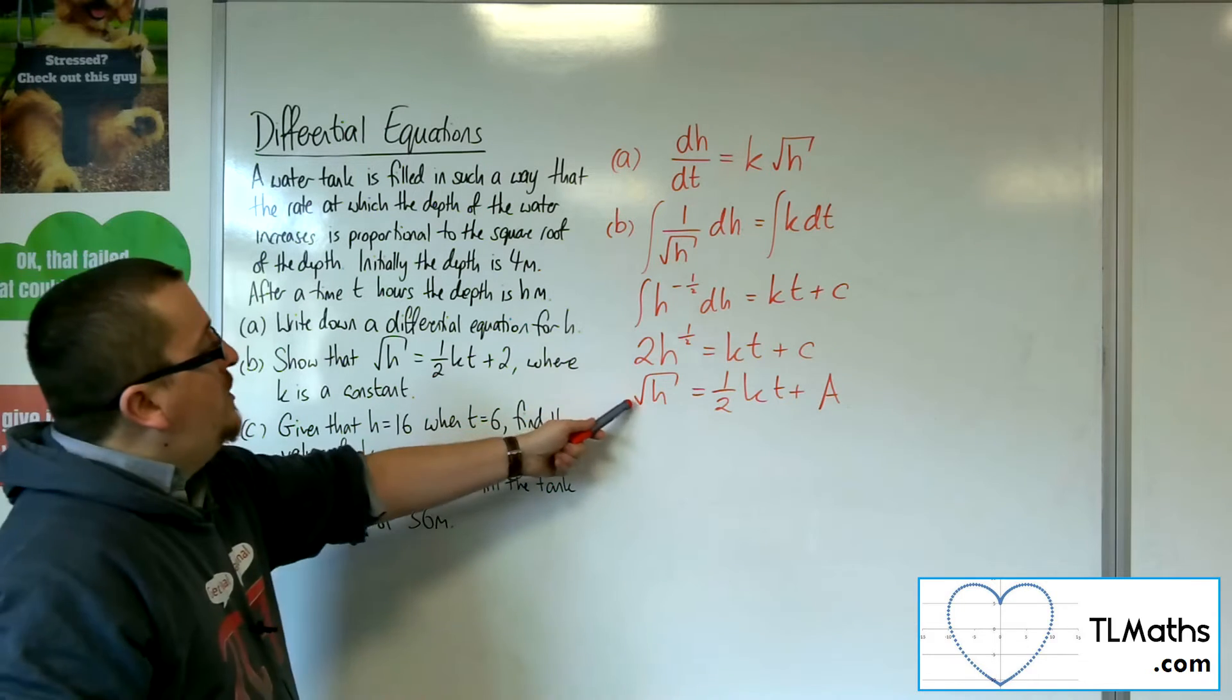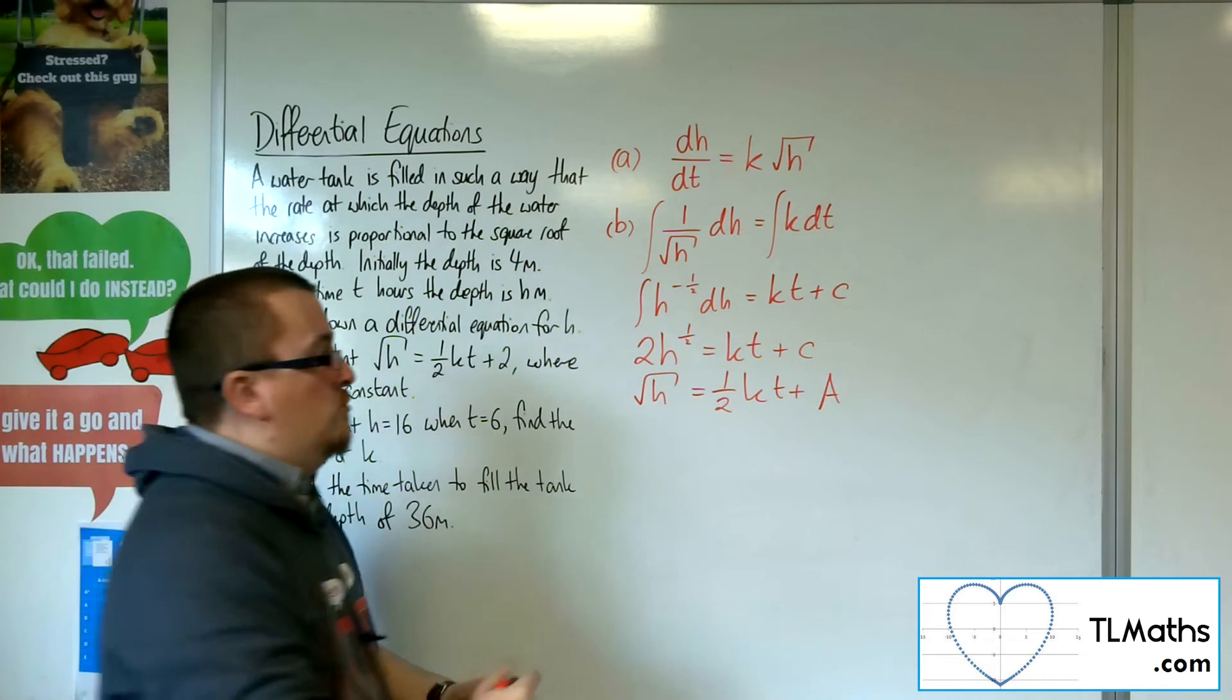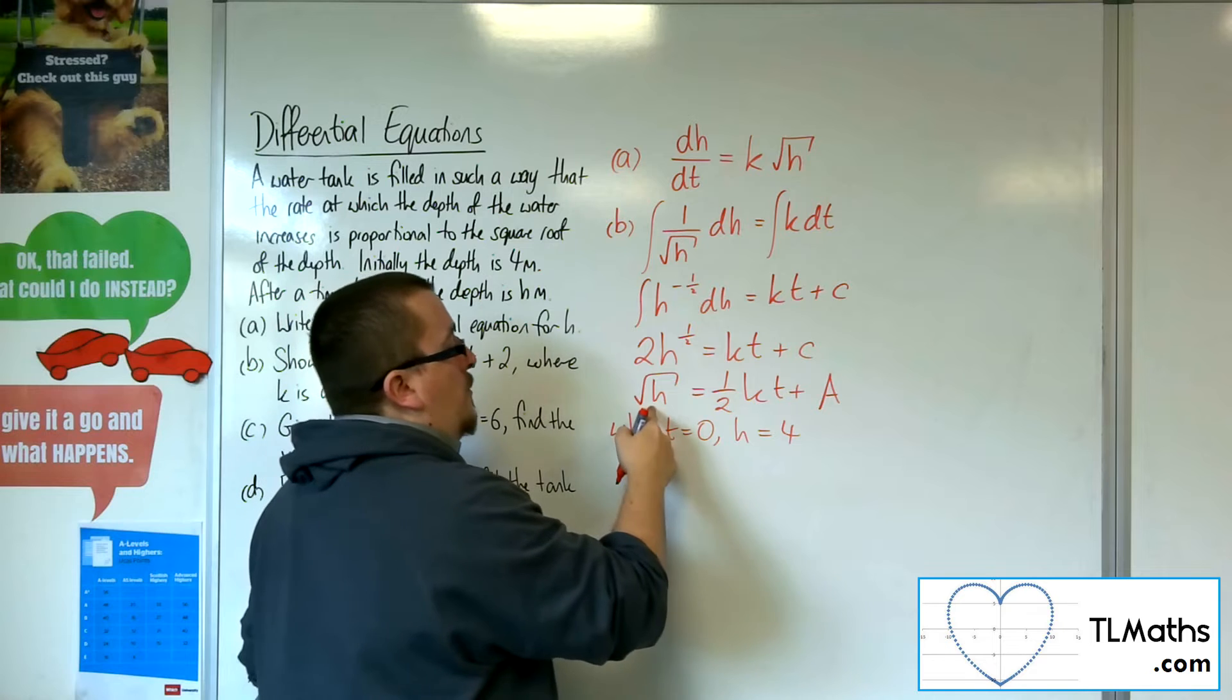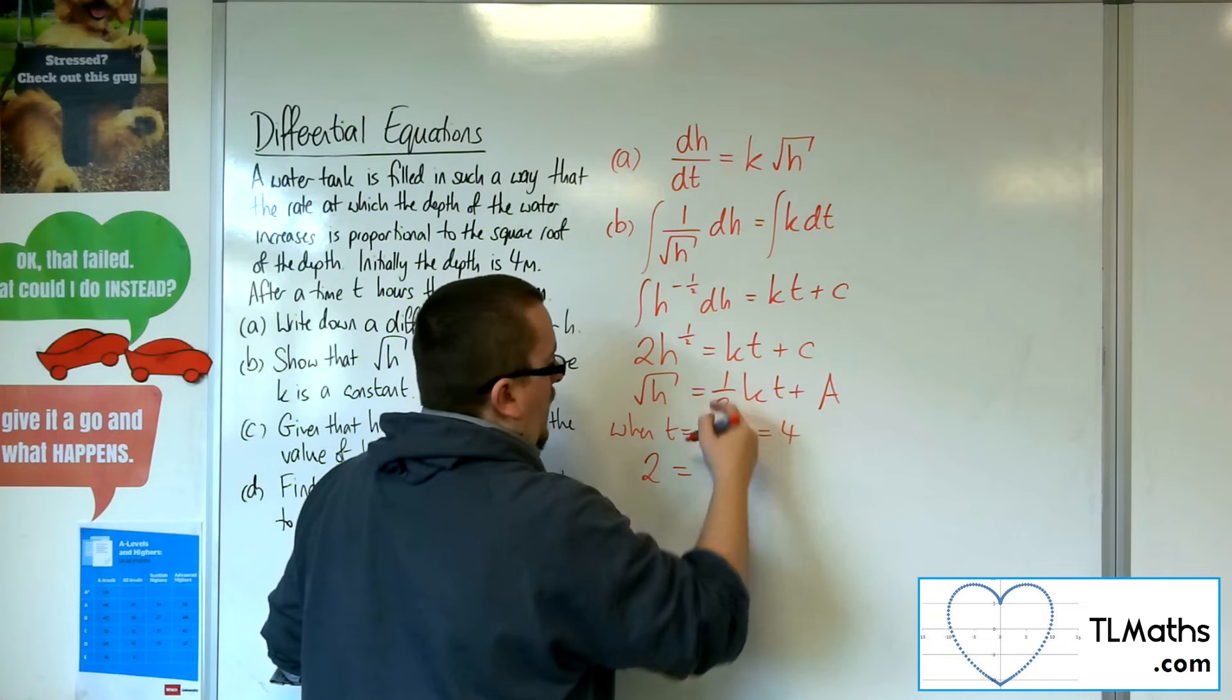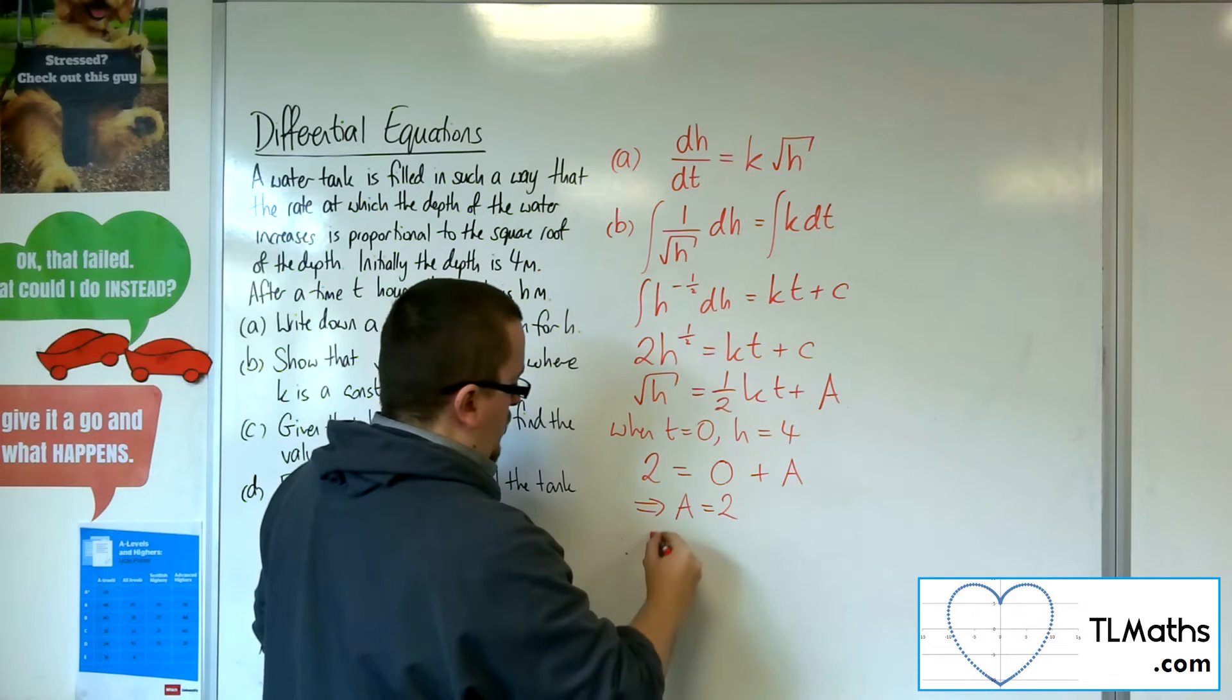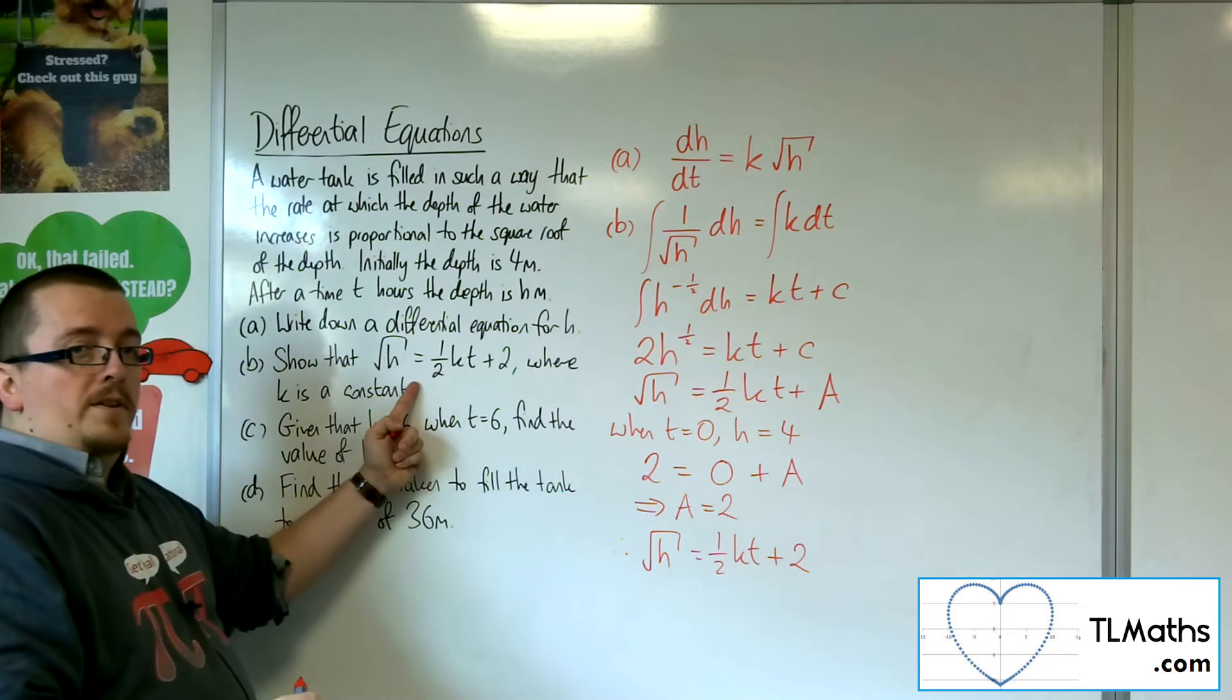Now, I need to use one of my initial conditions. So the initial condition I've got is initially the depth is 4 metres. So when t is 0, the depth of the water is 4. So we've got the square root of 4, which is 2. When t is 0, I get 0. So a must be 2. So therefore, we have that root h is equal to 1 half kt plus 2. As was required in part b.